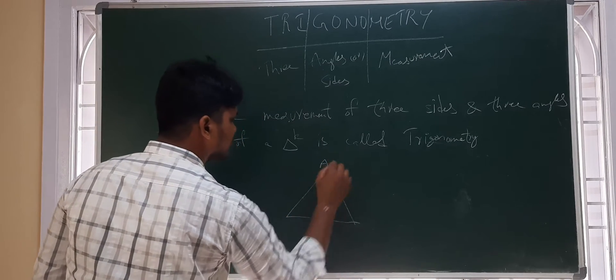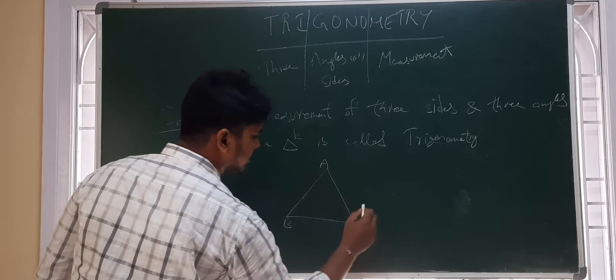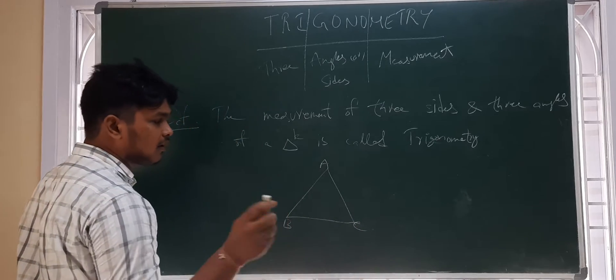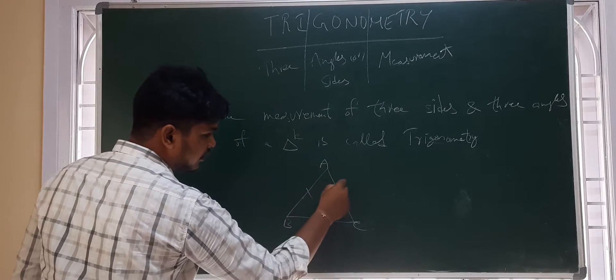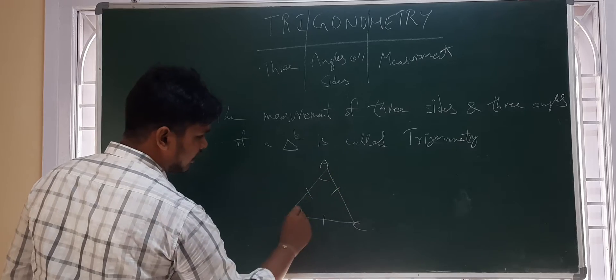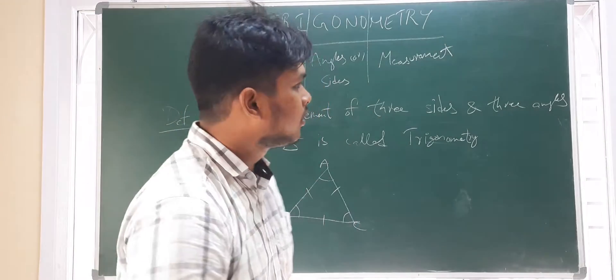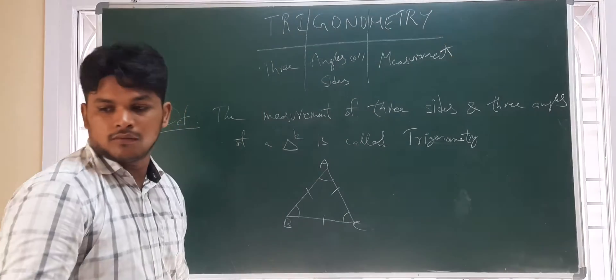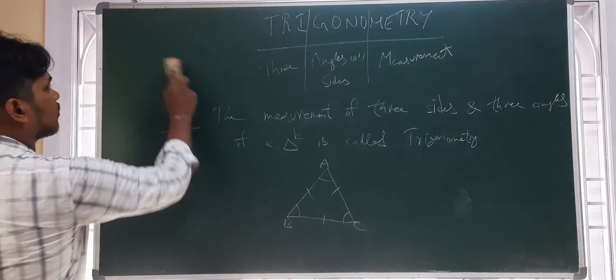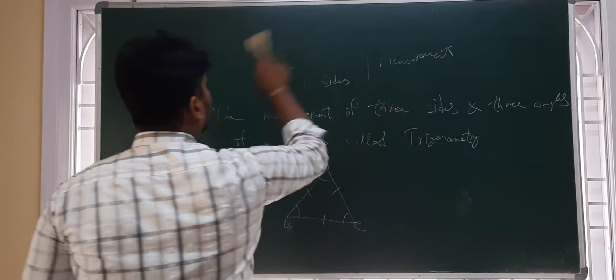This is a triangle. Let us suppose this is a triangle A, B, C. The definition tells the measurement of three sides and three angles of a triangle is called trigonometry. Now moving on to the next part of this.